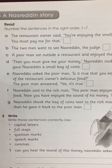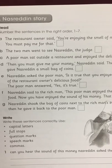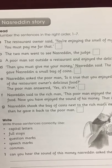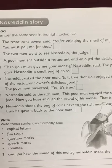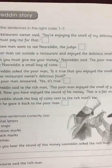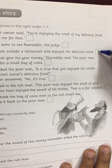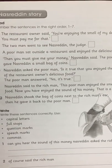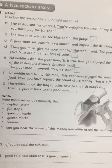Rearrange the sentences in the right order — number them one to seven. The summary of the story is given; you need to arrange them in order. The starting sentence is: 'A poor man sat outside a restaurant and enjoyed the delicious smell' — write number one there and complete the rest, finding which is two, three, four, five, six, and seven.